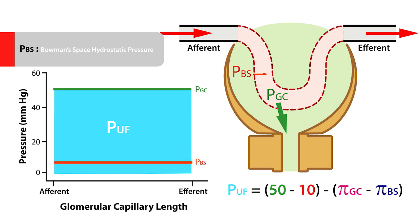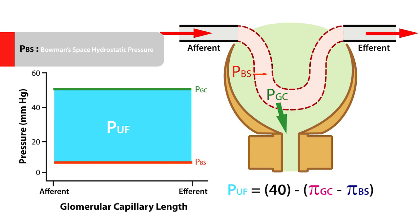Likewise, PBS opposes the glomerular capillary hydrostatic pressure, which reduces the net ultrafiltration pressure from 50 mmHg to 40 mmHg. The next force is referred to as the glomerular capillary oncotic pressure, abbreviated as PIGC.